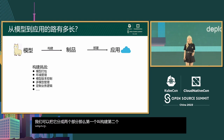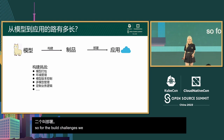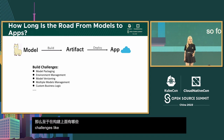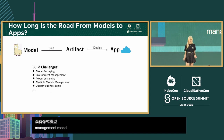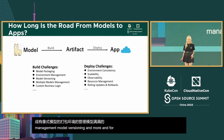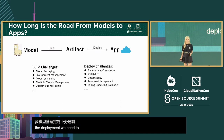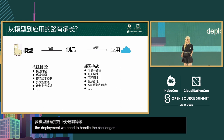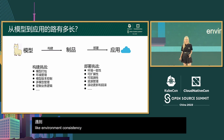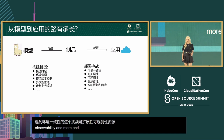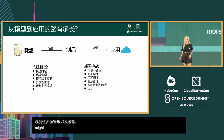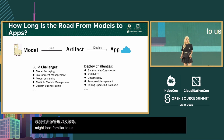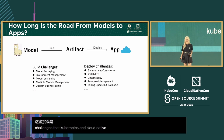For the build challenges, we need to handle model packaging, environment management, model versioning, and more. For deployment, we need to handle environment consistency, scalability, observability, and more. The deployment challenges might look familiar, since those are the challenges that Kubernetes and the cloud native ecosystem try to resolve.